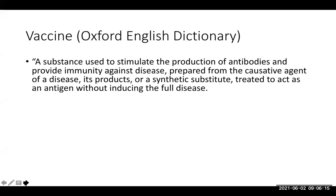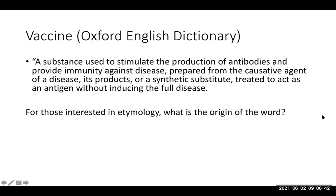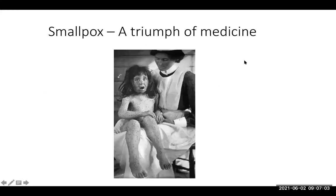In terms of the definition of vaccines, according to the Oxford English Dictionary, a vaccine is a substance used to stimulate the production of antibodies and provide immunity against disease, prepared from the causative agent of a disease, its products, or a synthetic substitute, treated to act as an antigen without inducing the full disease. First question: what is the origin of the word 'vaccine' from etymology? From Latin — from a cow. Joanne and Cindy were right on it.